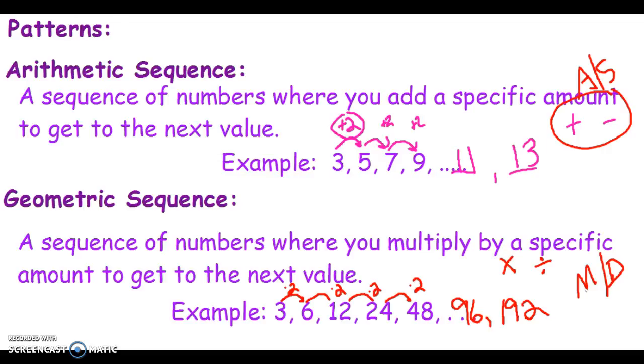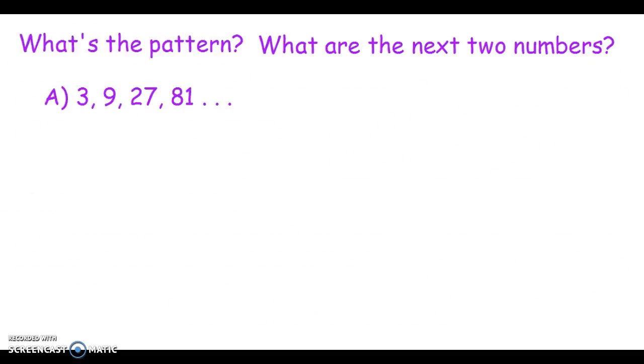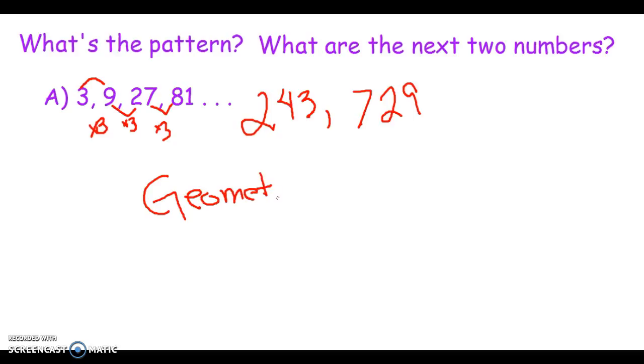So up here addition or subtraction, down here multiplication or division. Those are the kind of mathematical sequences we might be looking at. Let's look at this pattern: 3 to 9 I'm multiplying by 3, 9 to 27 I'm multiplying by 3, 27 to 81 I'm multiplying by 3. So what are the next two numbers? Well, 81 times 3 gives me 243, multiply by 3 I get 729. That was a geometric pattern because I was multiplying.